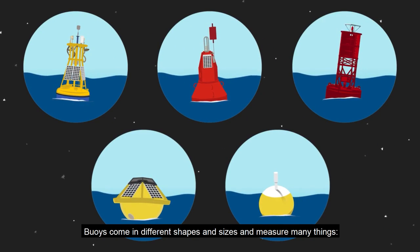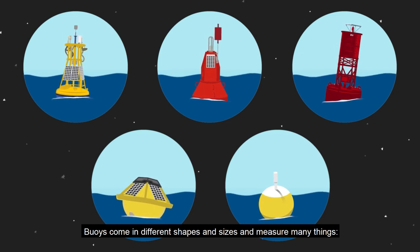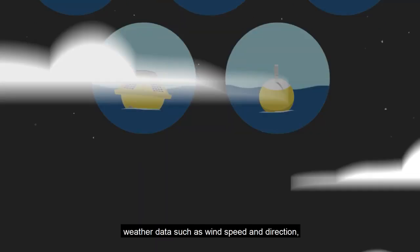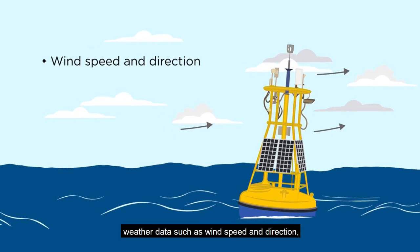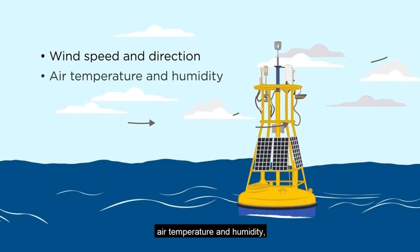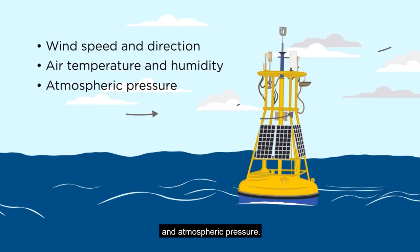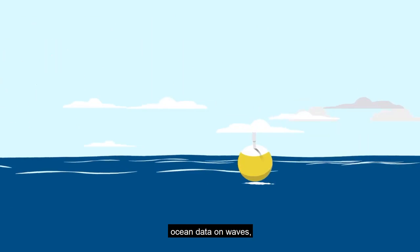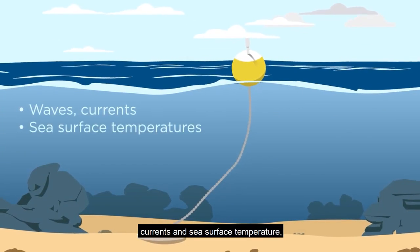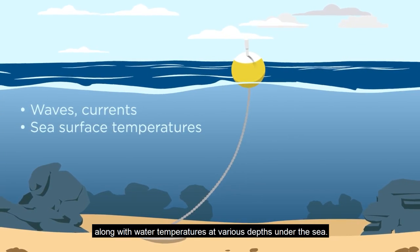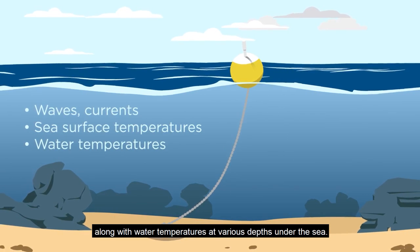Buoys come in different shapes and sizes and measure many things. Weather data such as wind speed and direction, air temperature and humidity, and atmospheric pressure. Ocean data on waves, currents and sea surface temperature, along with water temperatures at various depths under the sea.